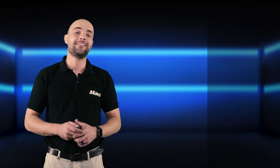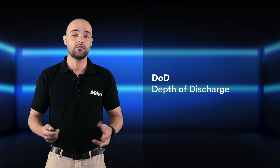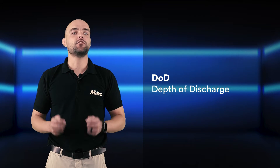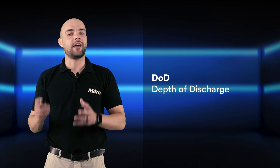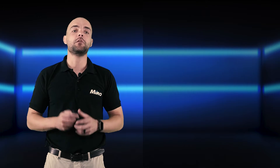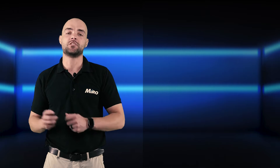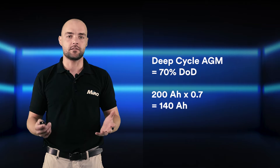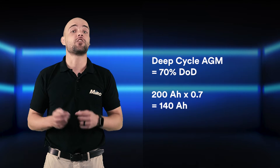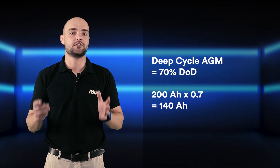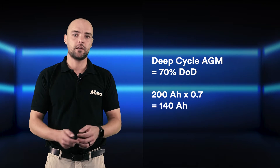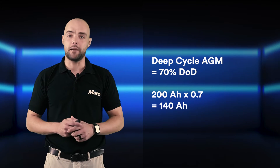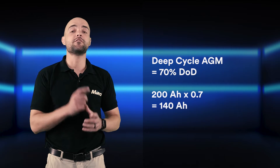All batteries have a recommended DoD percentage, or depth of discharge. DoD is the recommended depth of energy expenditure — the energy that can be used from a battery without damaging the internal chemistry. Deep cycle AGM batteries have a recommended DoD of 70 percent, which means that you can only use 70 percent of the total capacity. For example, a 200 amp hour AGM battery can only provide 140 amp hours of usable capacity.